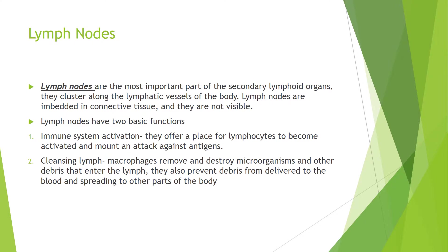Lymph nodes are the most important part of the secondary lymphoid organs. They cluster along the lymphatic vessels of the body and are embedded in connective tissue, so they are not visible. Lymph nodes have two basic functions: immune system activation, where they offer a place for lymphocytes to become activated and mount an attack against antigens, and cleansing the lymph. Macrophages remove and destroy microorganisms and other debris that enter the lymph, and also prevent debris from being delivered to the blood and spreading to other parts of the body.